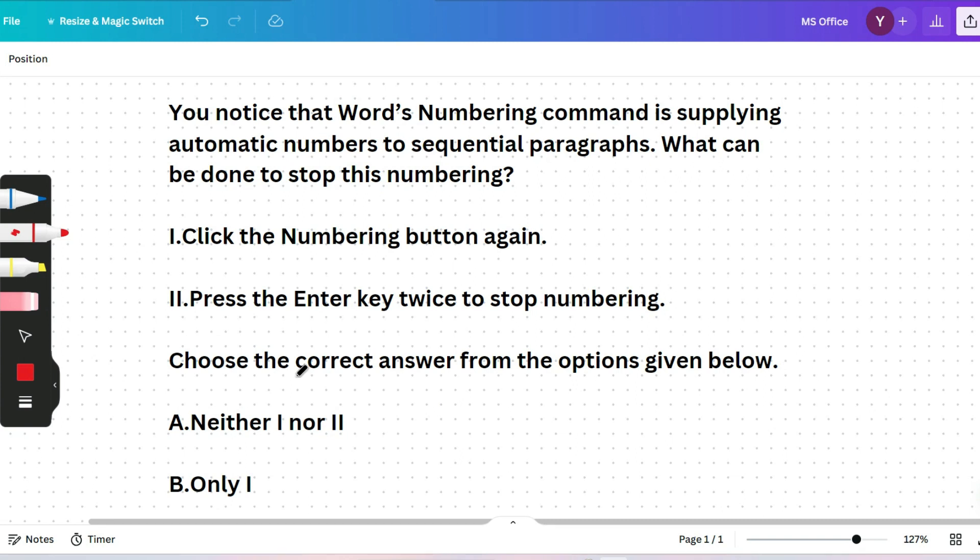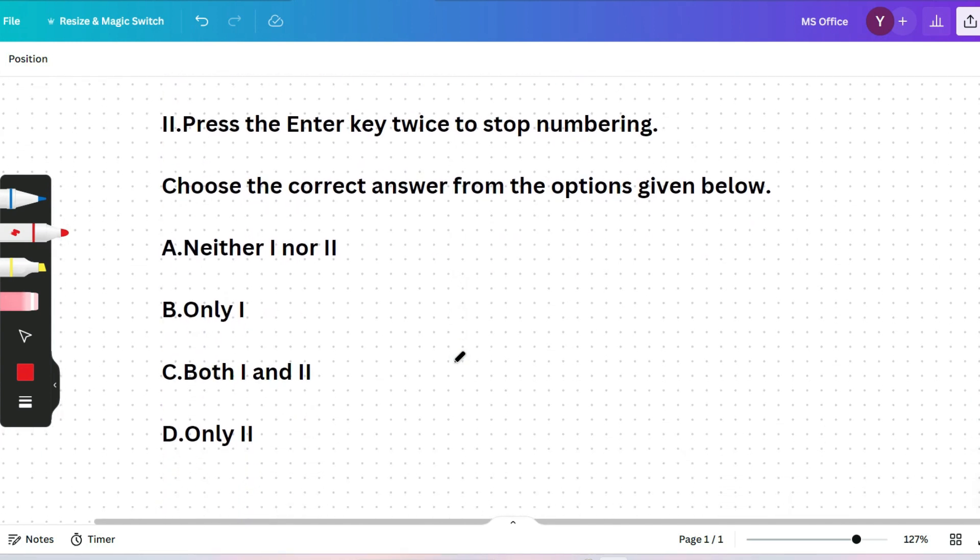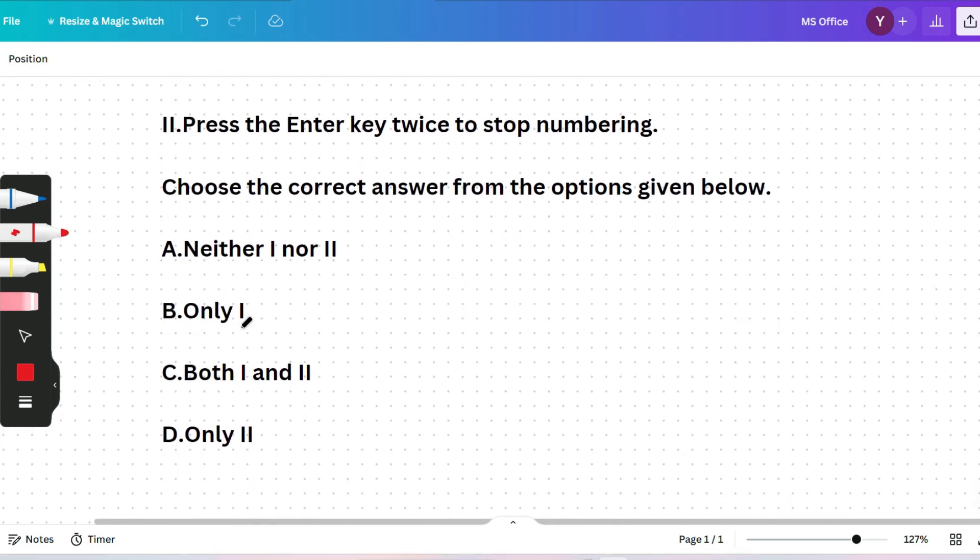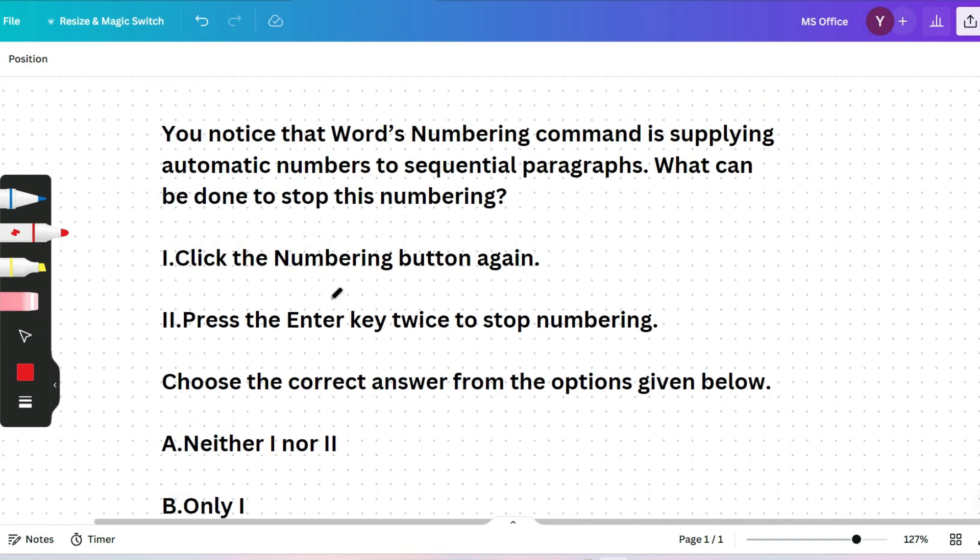The next question is: you notice that Word's numbering command is supplying automatic numbers to sequential paragraphs. What can be done to stop this numbering? Statement one: click the numbering button again. Statement two: press the Enter key twice to stop numbering. Choose the correct answer from the options given below: neither one nor two, only one, both one and two, or only two. Please give me the answer in the comment section before I give the answer.